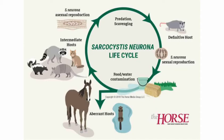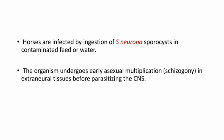This is the life cycle of Sarcocystis neurona. The definitive host is the opossum, where sexual reproduction of Sarcocystis neurona occurs. Through fecal or urine contamination — via food or water contamination — it can reach aberrant hosts like horses. In the intermediate host, there will be asexual reproduction of Sarcocystis neurona. By predation or scavenging, it again reaches the definitive host — the opossum — and the cycle continues. Horses are infected by ingestion of Sarcocystis neurona sporocysts in contaminated feed or water. The organism undergoes early asexual multiplication — that is, schizogony — in extra-neural tissues before parasitizing the CNS.